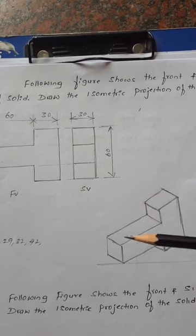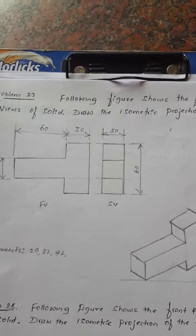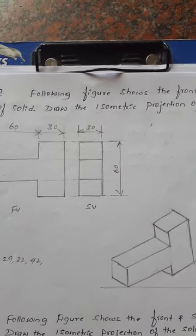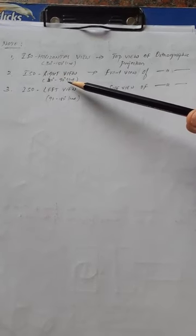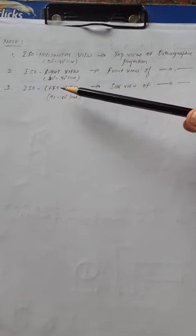This object looks like this in three-dimensional nature. Remember, in the previous drawing, whatever the top view of the orthographic projection, that is what we draw in the horizontal plane — we show that in the iso horizontal view, that is the 30-degree and 150-degree line. The front view is shown on the 30-degree and 90-degree line, and for the side view of the orthographic view, we show it in the iso left view, that is the 90-degree and 150-degree line. This has already been discussed in the basics of construction of isometric projection of planes and solids.